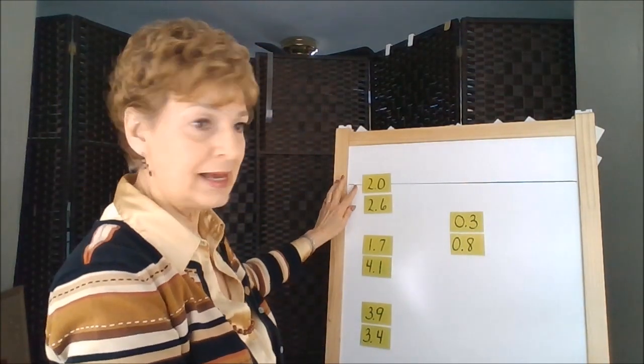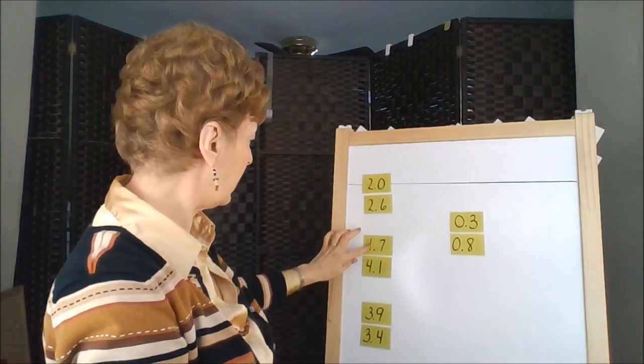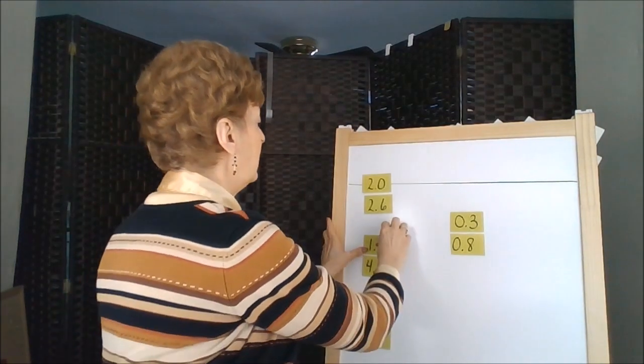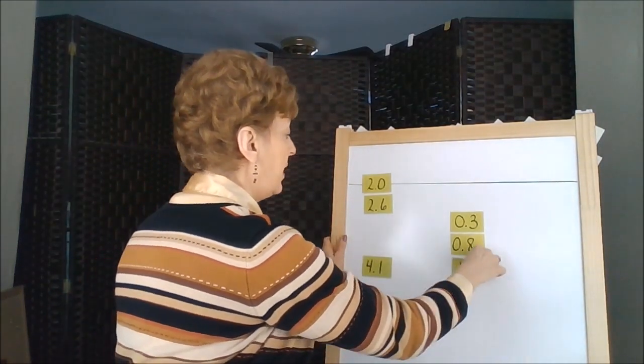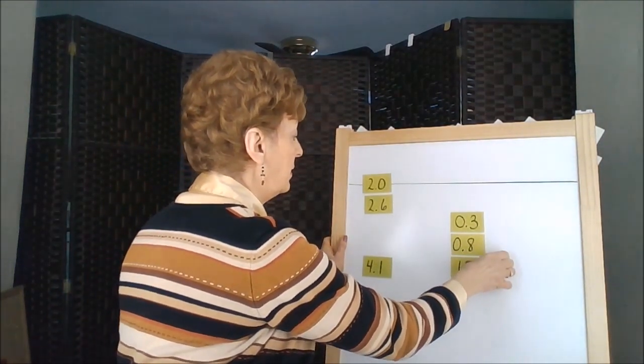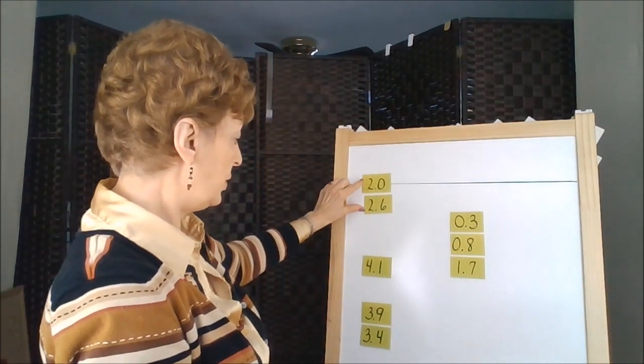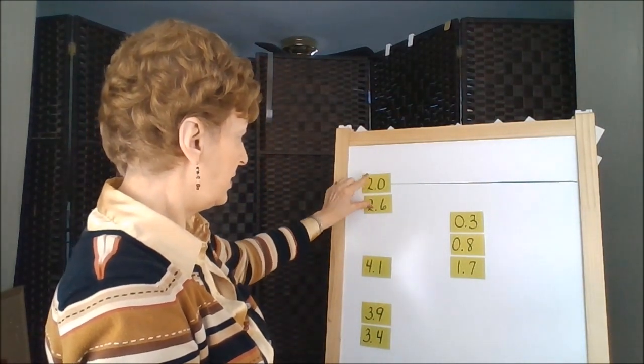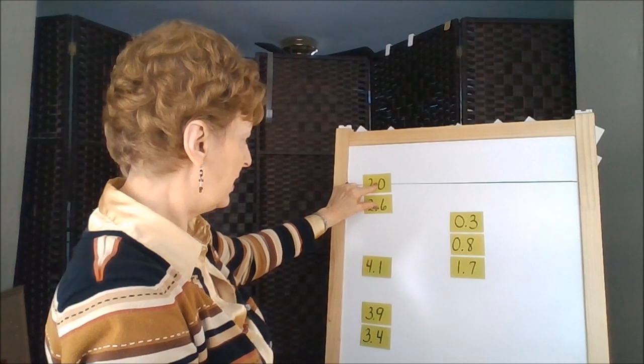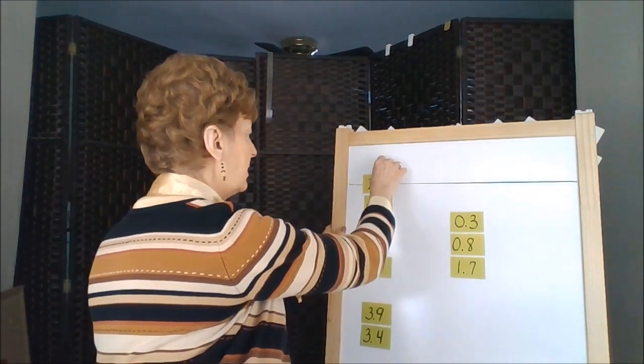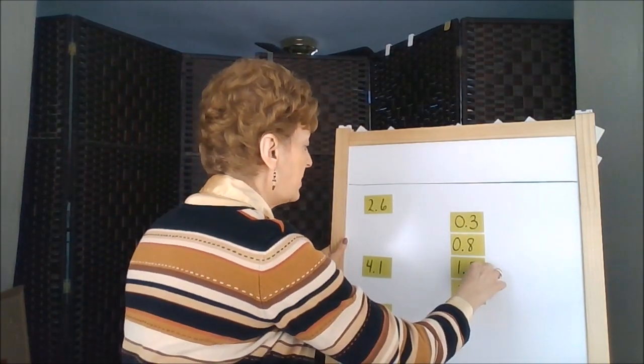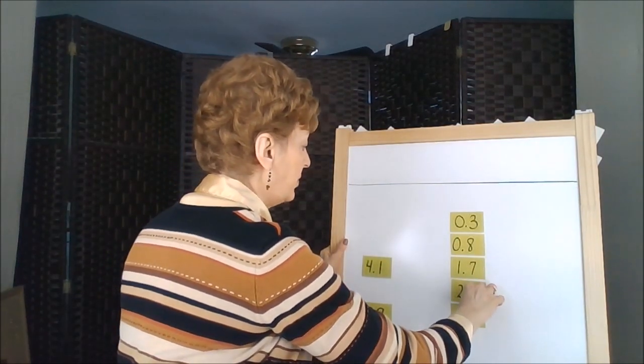Going back to our data set now we're looking for ones. Here's a one, that's the only one, so that would be next. We have two twos so we're going to look at second numbers. Zero is smaller than six, so 2.0 is next and 2.6 is after.